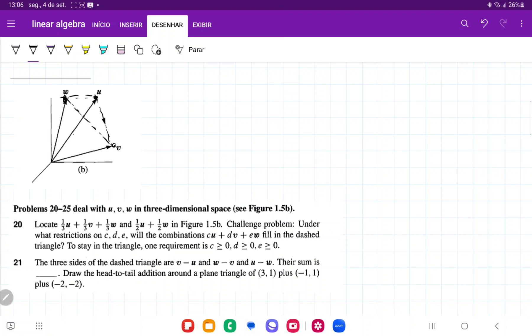We're going to have these three sides, and these three sides are equal to v minus u, so one side is v minus u, the other one is w minus v, and the other one is u minus w.